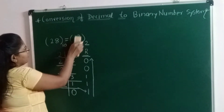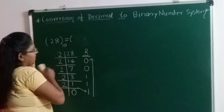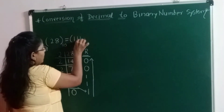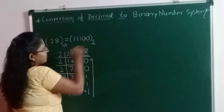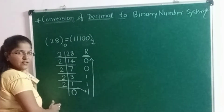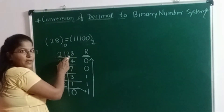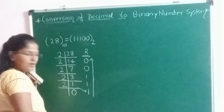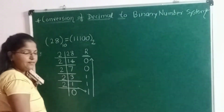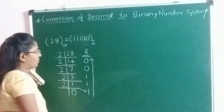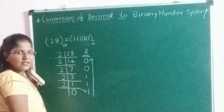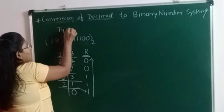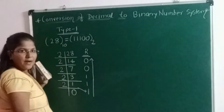I will write now instead of the question mark the binary equivalent, that is 11100, and its base is 2. This is a very simple process: keep on dividing the given decimal by the base — here the base of binary is 2 — keep on dividing until we get the quotient as 0, and at the end collect all the remainders from bottom to top. This is the binary equivalent of the given decimal. This is the first type, or Type 1, to convert decimal to binary.